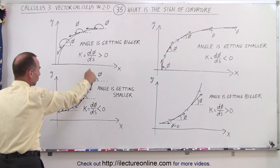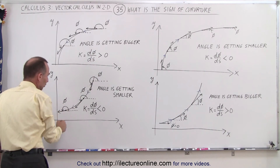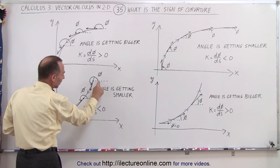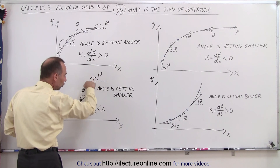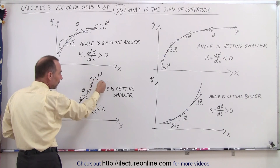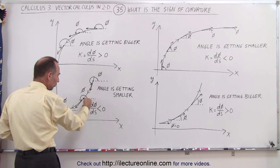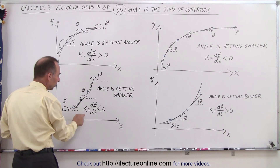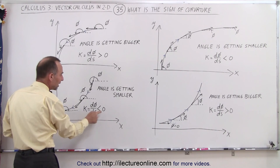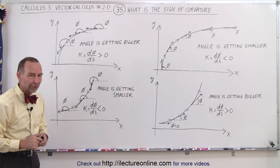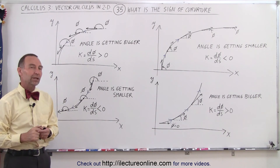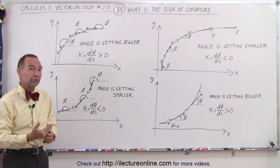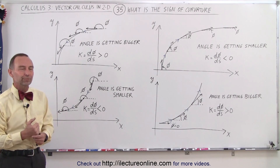In this case, you travel along the curve like this. Notice the angle from the positive x-axis to the tangent unit vector is this angle right here. Notice as we travel along the curve, the angle is getting smaller. Getting smaller means that the curvature is therefore a negative quantity. And that's how we determine the sign of the curvature of any curve.